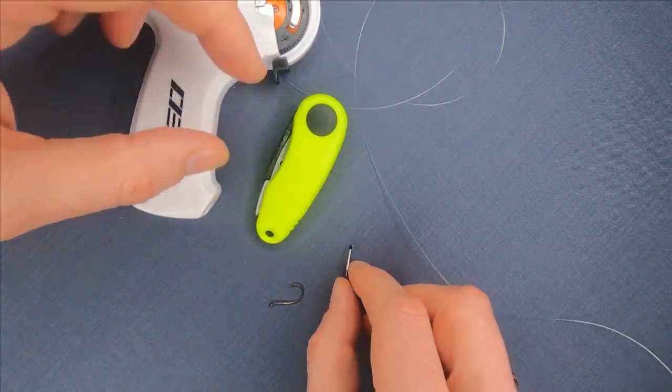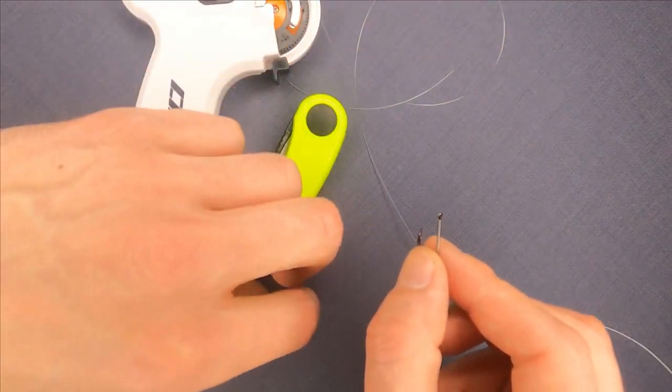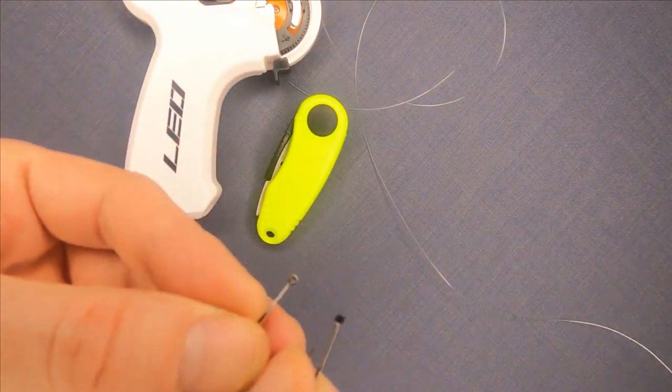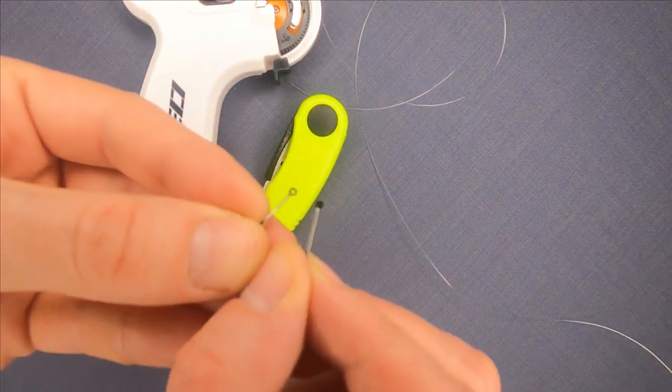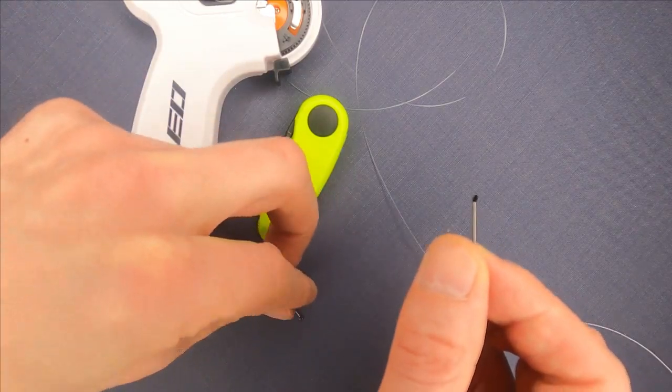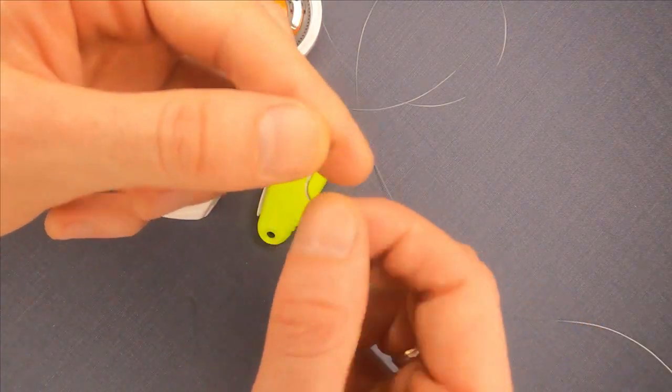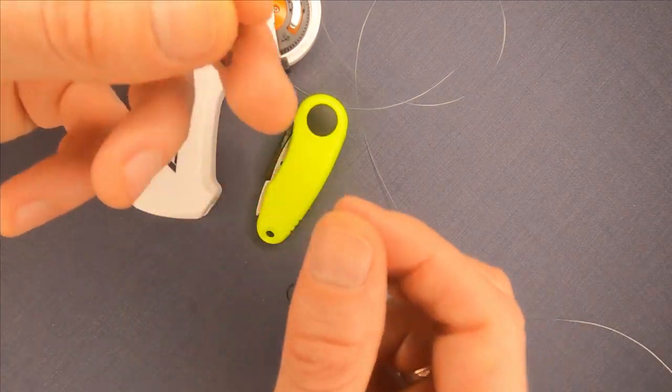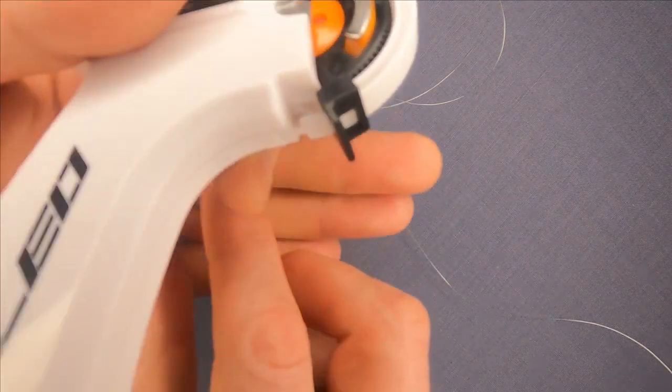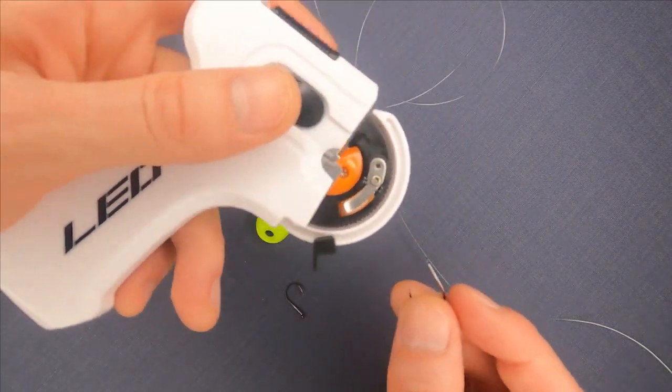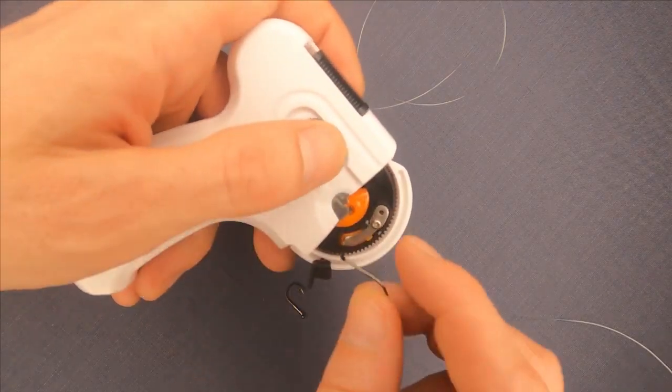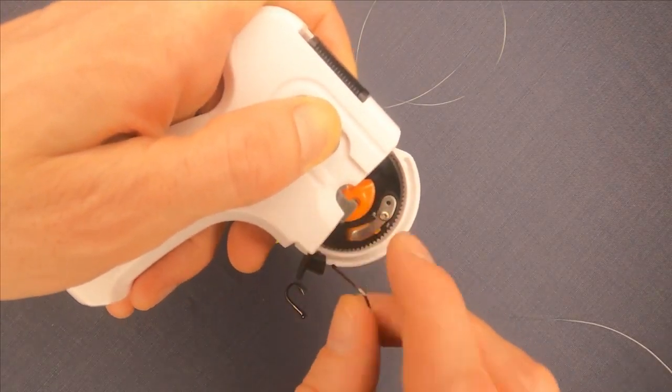It works perfectly well with hooks with or without an eye, but as a demonstration I will use a hook without an eye. To begin, you need to pull this plastic part away from the wheel which loosens this metal part where you insert the hook.